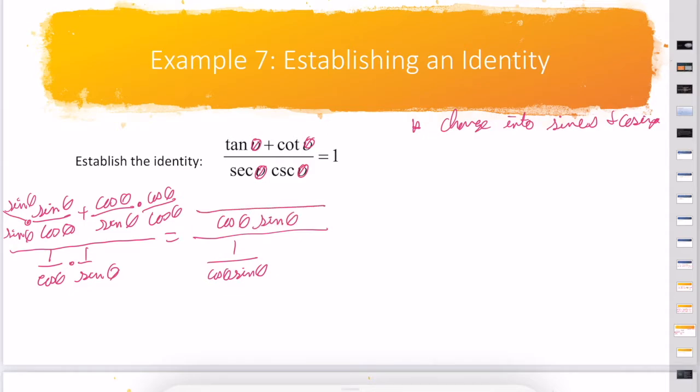I get sin² θ plus cos² θ. What is sin² θ plus cos² θ? Well, that is 1. So I have 1 over cos θ sin θ.